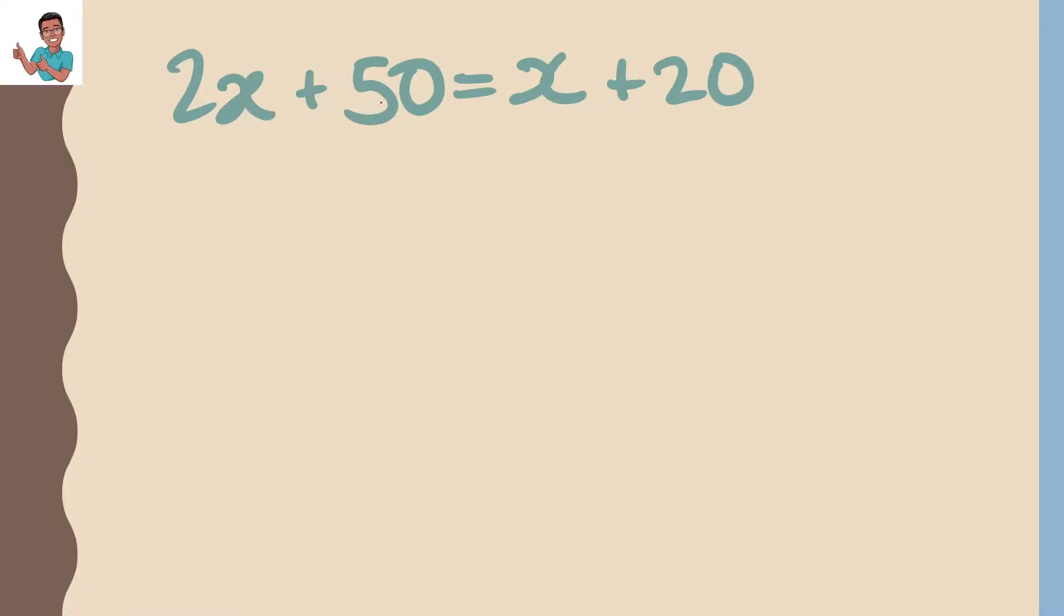Let's look at this. 2x plus 50 equals x plus 20. This is similar to collecting like terms. We want to make all the x's together and all other variables together. So we want to move the x there and we want to move the 50 there. We'll do this step by step. So in order to get the x to there, we minus by x on both sides. So we get x plus 50 equals 20.